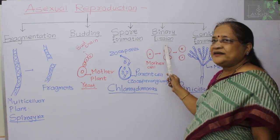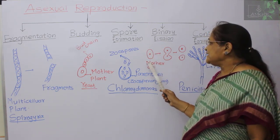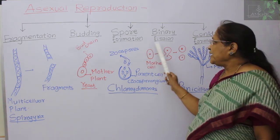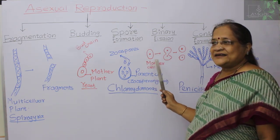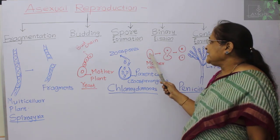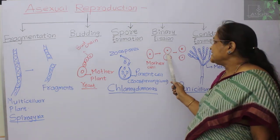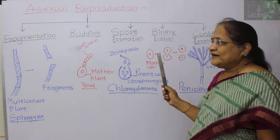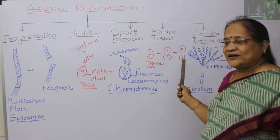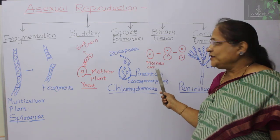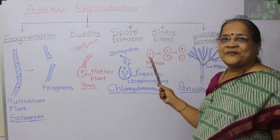The next method is binary fission, seen mostly in unicellular fungi. The mother plant is a single entity. The mother cell — its cytoplasm and nucleus — gets pinched off and differentiated. It gets pinched in the center and separates slowly into two parts. The final result is two new cells or structures similar to the mother plant. This is binary fission.